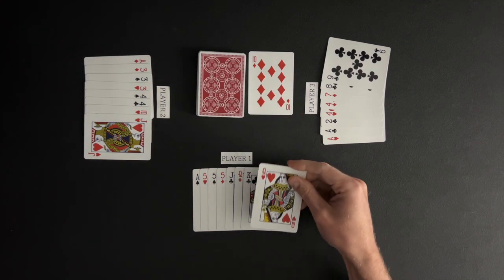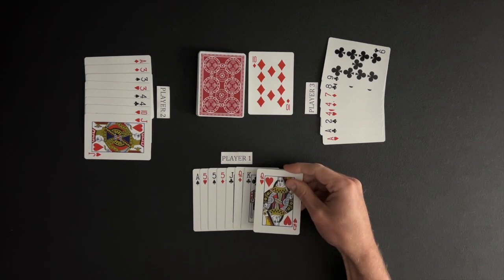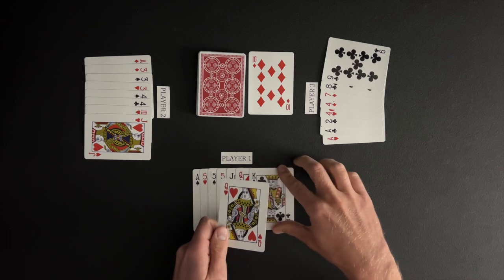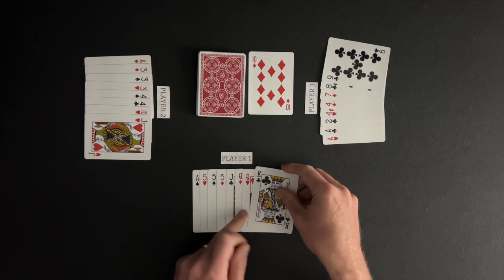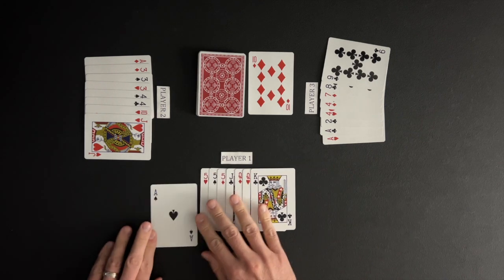Player 1 draws from the middle deck. When drawing from the middle deck, the player will only draw the one card. Player 1 ends their turn by discarding a card.